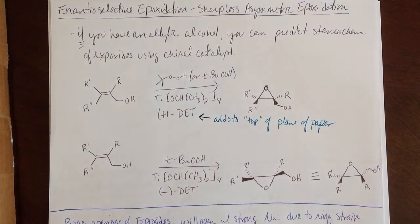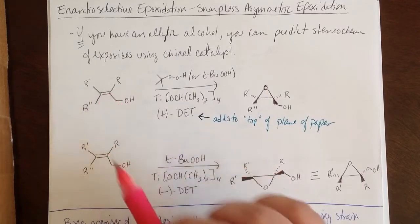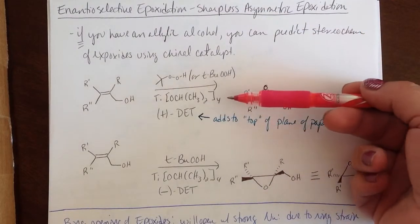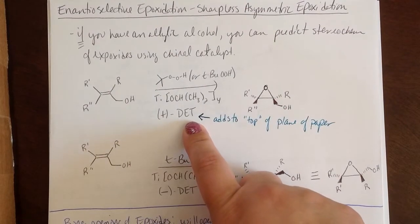Now we're going to look at the enantioselective epoxidation reaction that Sharpless has presented to us as an asymmetric epoxidation. Mind you that this is something I'd rather want to expose you to more than actually have you use a lot. If you have an allylic alcohol, you can use terbutyl hydroperoxide with a catalyst that contains titanium and you can use this positive DET.